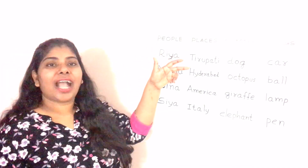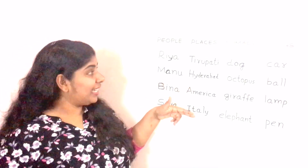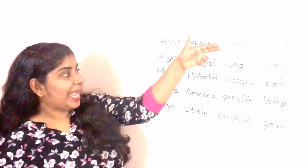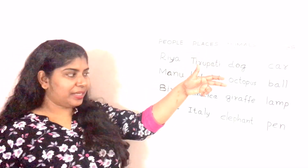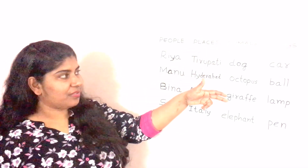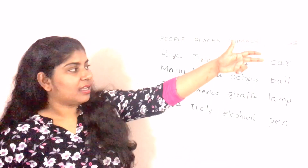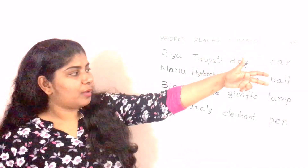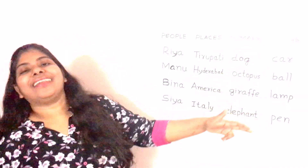Places: Tirupati, Hyderabad, America, Italy. Animals: dog, octopus, giraffe, elephant. And things: king, car, ball, lamp, pen. Okay?